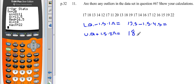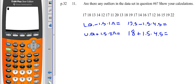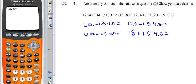So this one's going to be the upper quartile, 18, plus 1.5, times the inner quartile range, which is still 4.5. So let's take care of these calculations. So I'm going to type in here 13.5 minus 1.5 times 4.5.